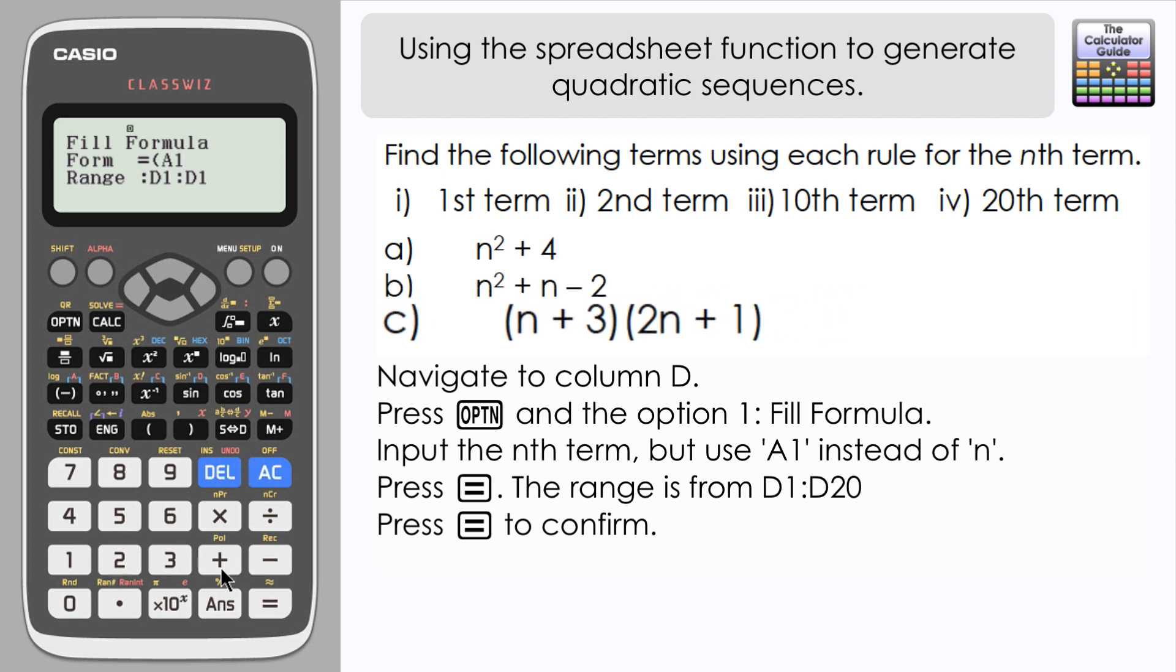So that's going to be A1 plus 3, close brackets, and then a second bracket. We've got 2n, that's 2 A1 plus 1, and then close the brackets.